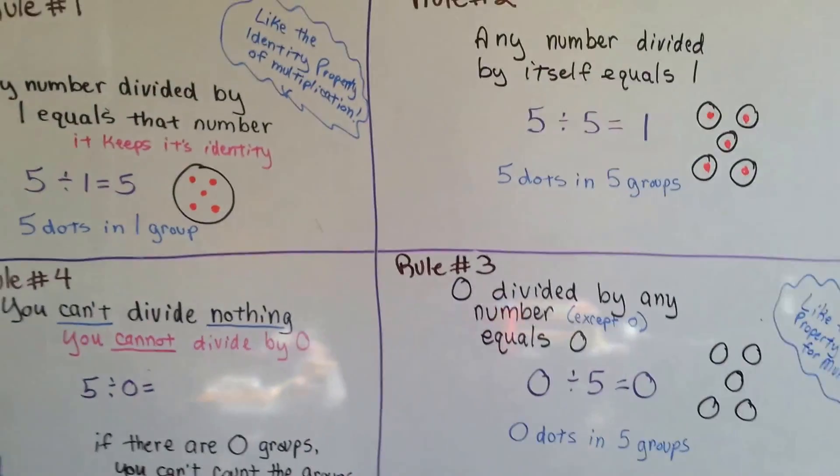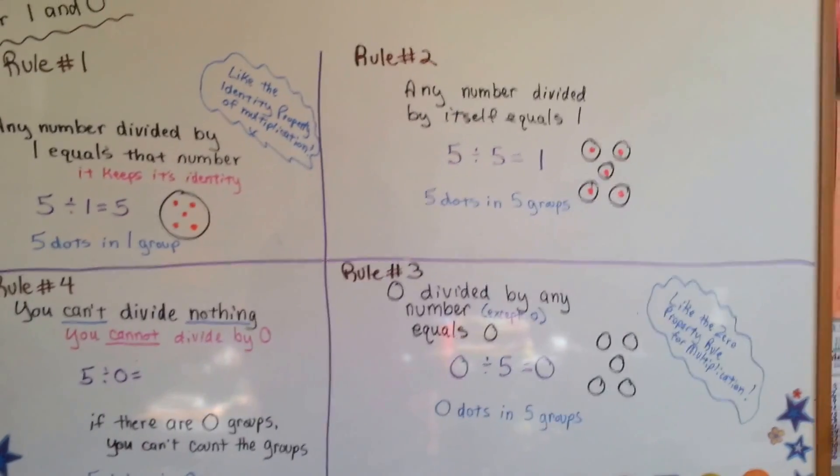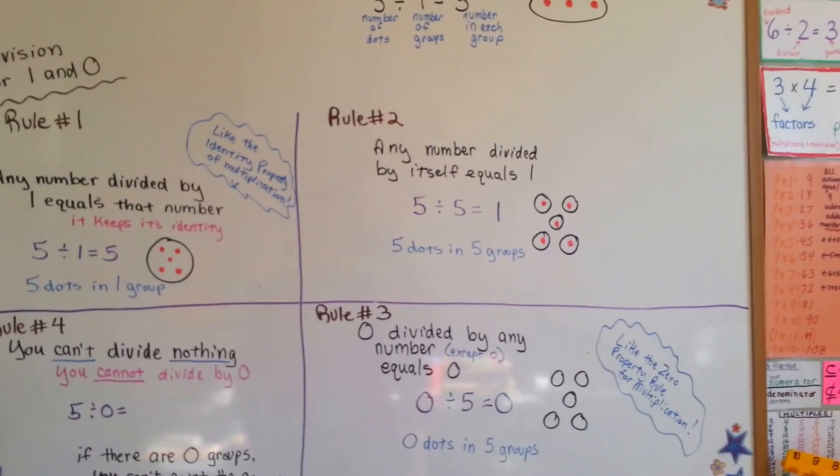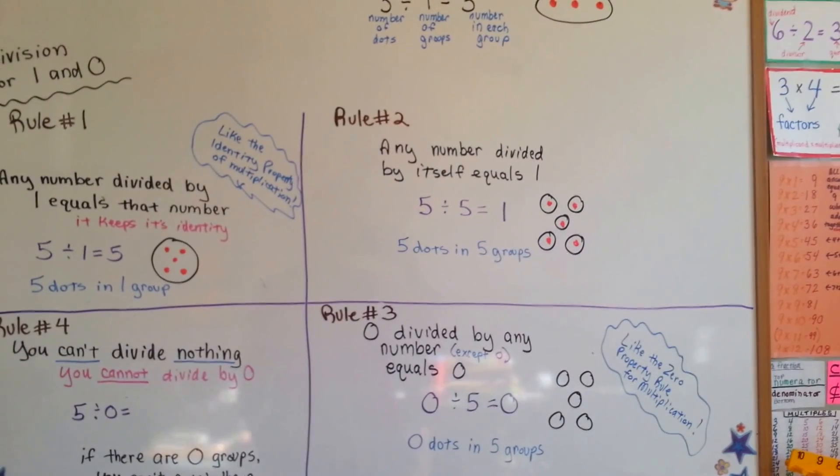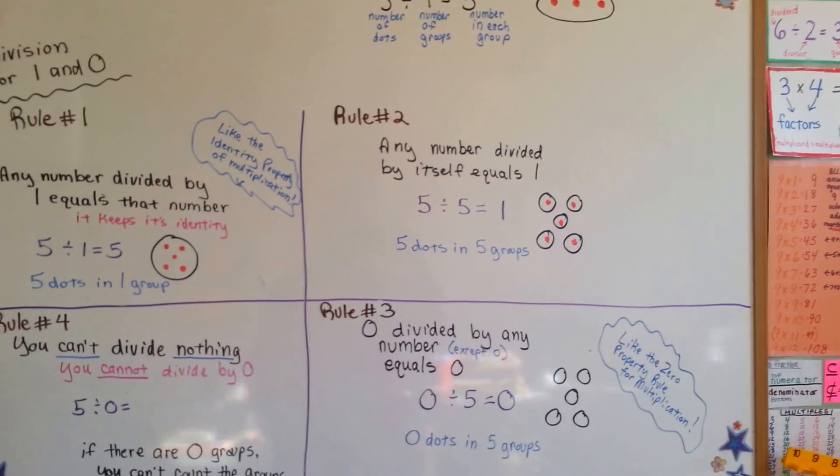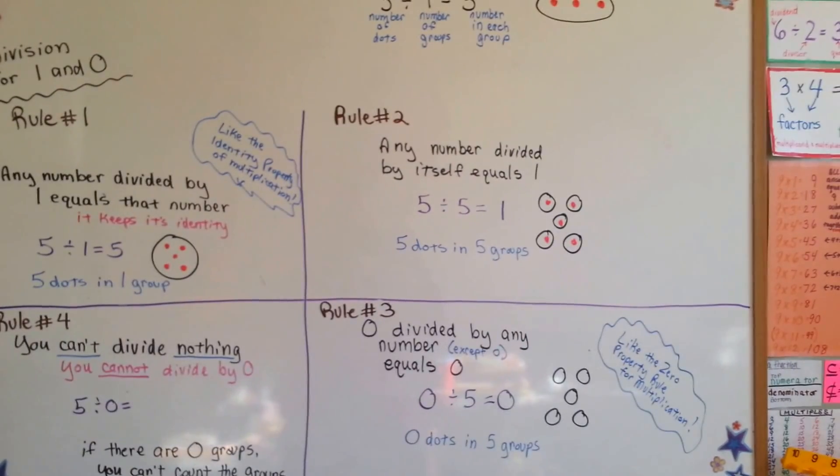So those are the 4 rules for dividing 1 and 0. Keep up the good work, memorize your times table, and I'll see you next video. Thank you.